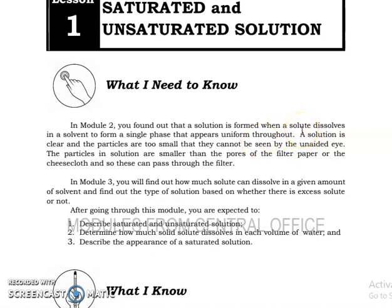This is already assumed that you have known the components of a solution, which are solute and solvent. Solute is the component that is present in smaller amount and the solvent is the component that is present in larger amount. And take note, they should appear uniform throughout, so it should be homogeneous. Solution is clear and appears uniform throughout. That's homogeneous.